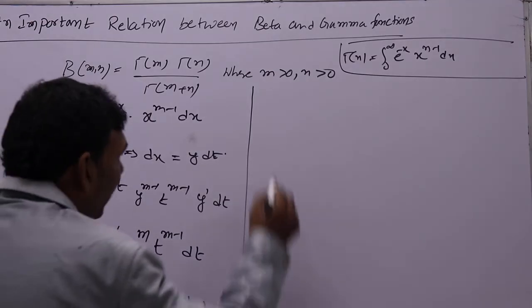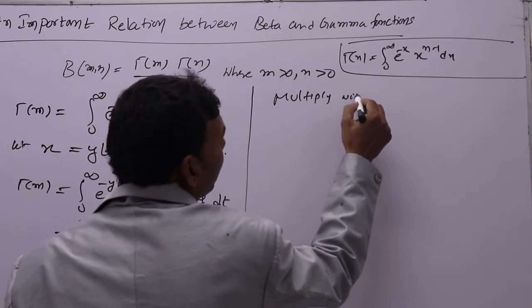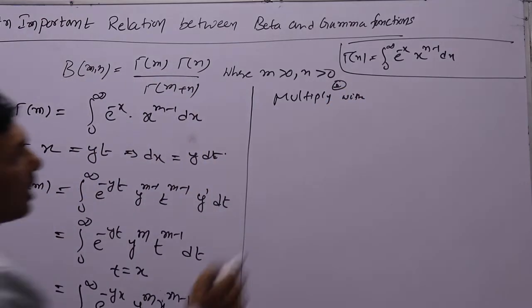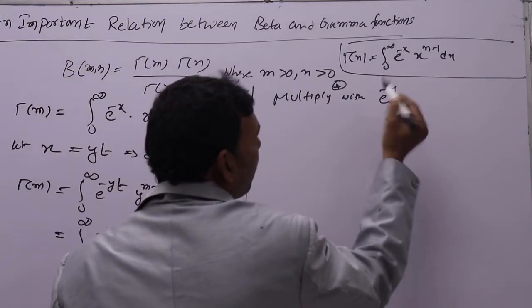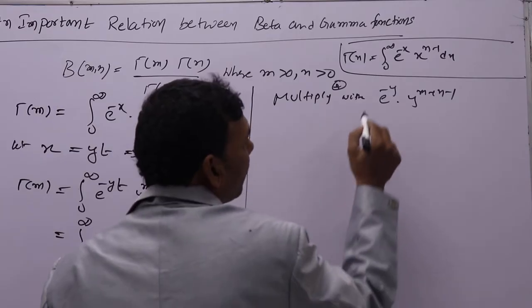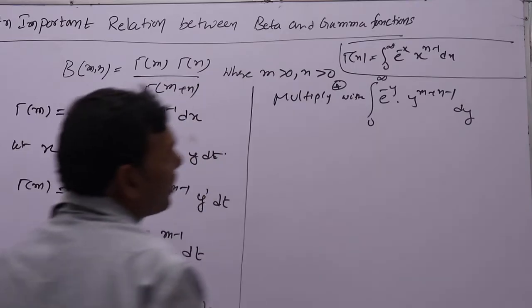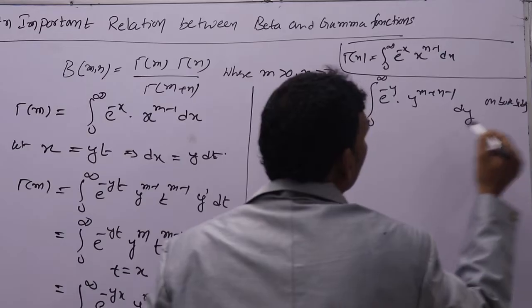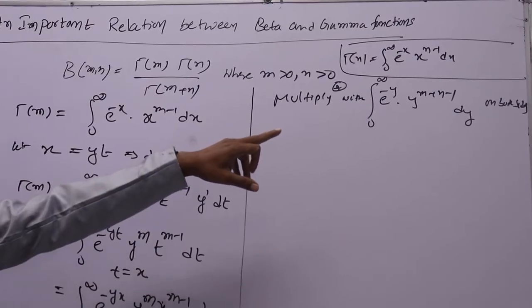To get that, I am multiplying the second equation with e to the power minus y into y to the power of m plus n minus 1, and integrating. We are multiplying with y power m plus n minus 1. Already you are having y power m, so from those two terms together we can get y power n minus 1.